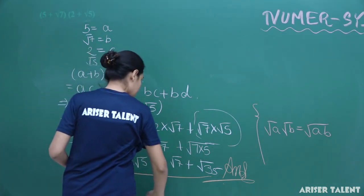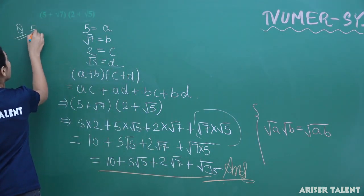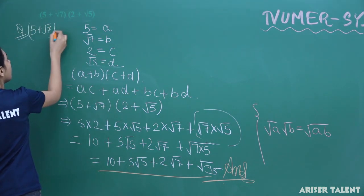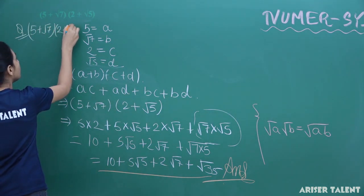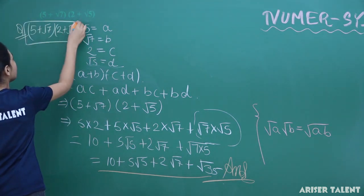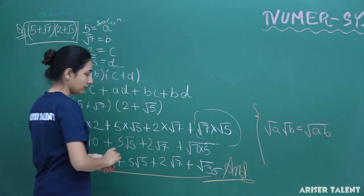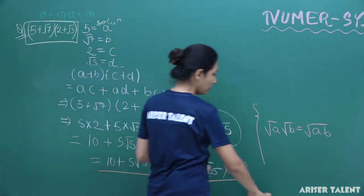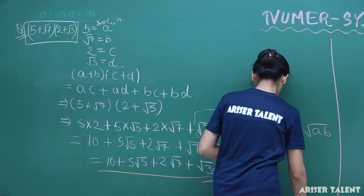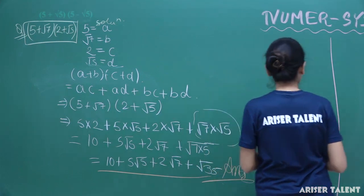So this is basically (5 + √7)(2 + √5) — that is the question — and that is the solution part. Now for the next one, the question is: 5 plus root 5.